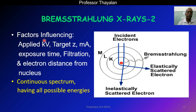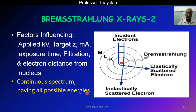The factors influencing Bremsstrahlung X-rays are: applied kV, target material Z value, tube current (milliampere), exposure time, type of filtration used, and the electron's distance from the nucleus. If the electron is very close to the nucleus, it produces higher energy; farther away, it produces lower energy. Essentially, Bremsstrahlung is a continuous spectrum having all possible energies and wavelengths.